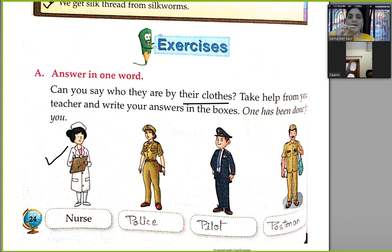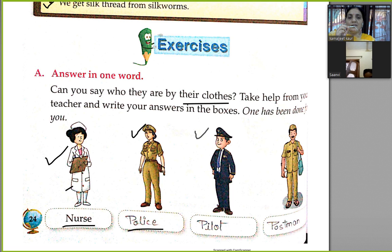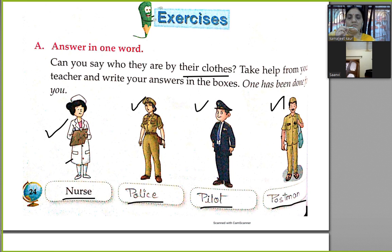She wears a white dress — this is the dress of a nurse. She wears a khaki uniform — it is the uniform of police, so we write police here. He wears the dress of a pilot, so we write pilot here. It is the uniform of a postman, so we write postman here.